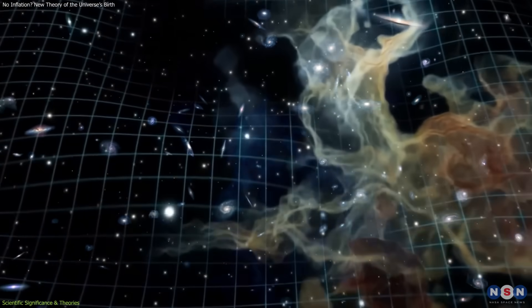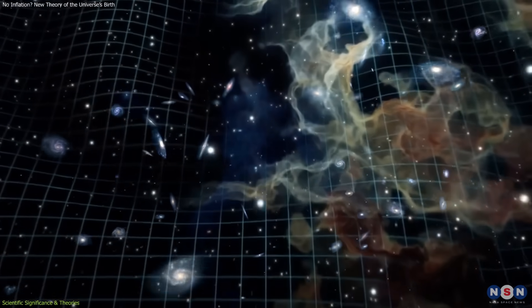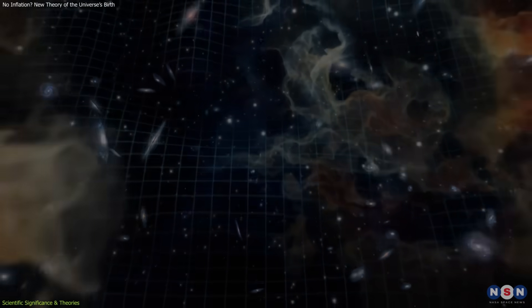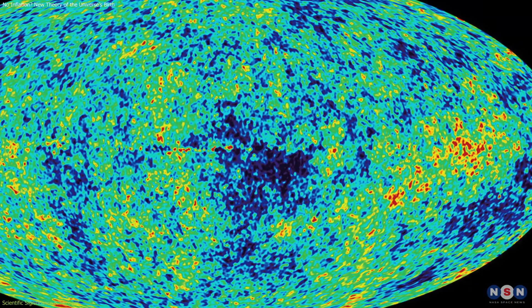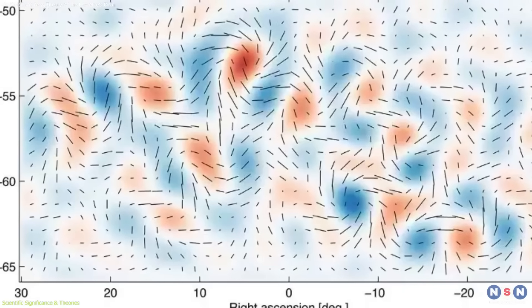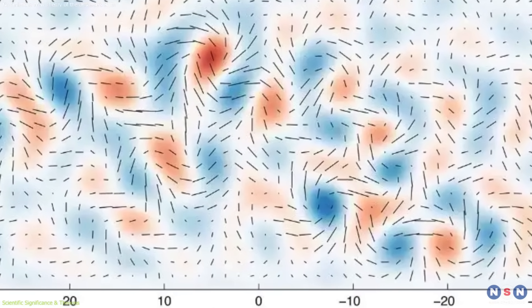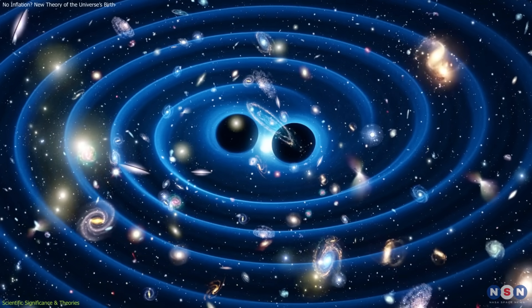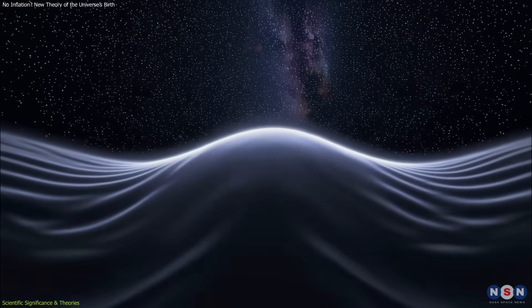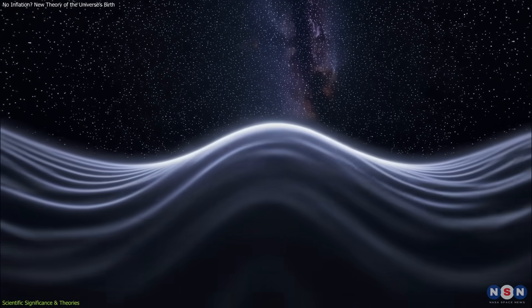By contrast, the gravitational wave model makes specific predictions. It should produce distinctive signatures in the polarization of the cosmic microwave background and in the background of primordial gravitational waves. Future measurements can confirm or refute these predictions. This focus on testability strengthens its scientific value.